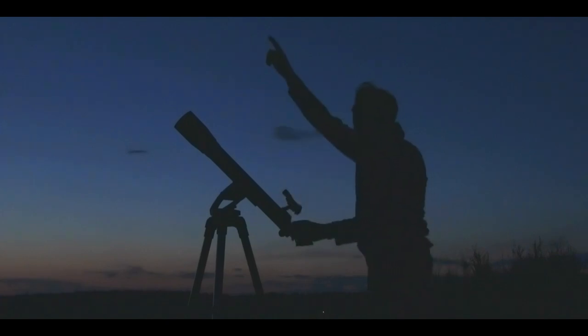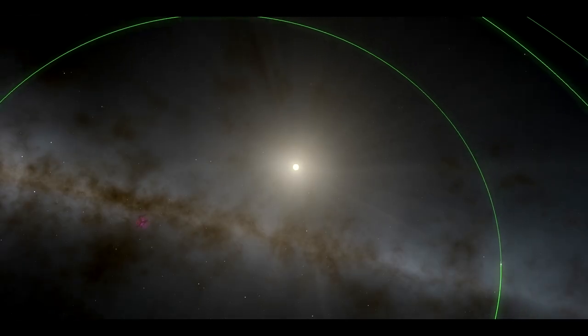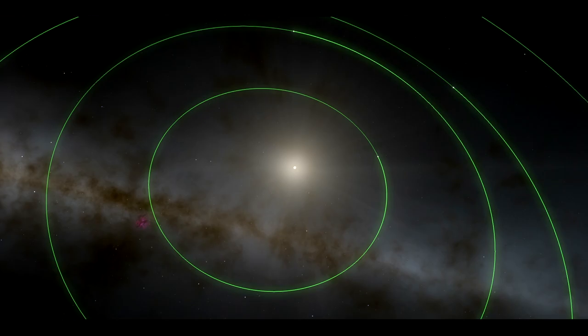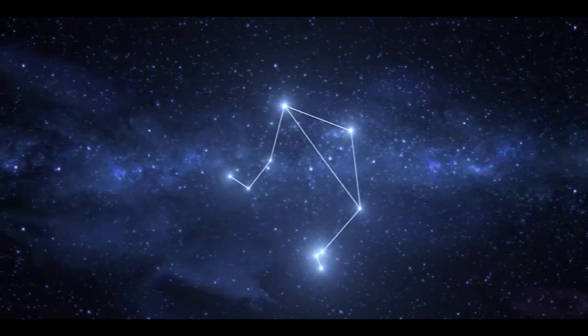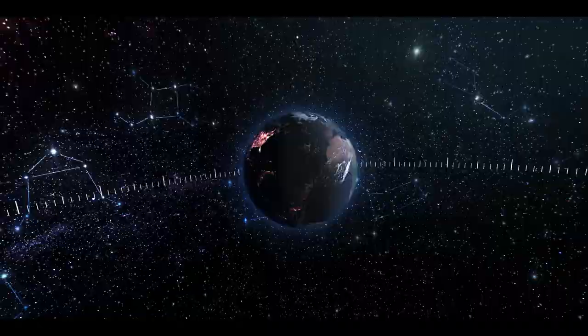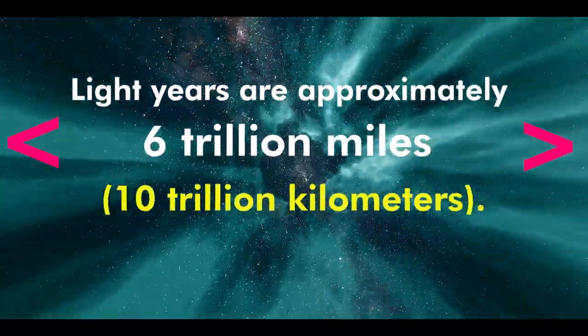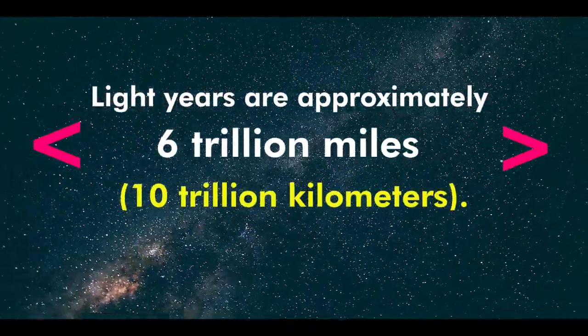The team discovered two newly discovered planets orbiting Gliese 581. It lies in the constellation Libra, 20 light-years away from Earth. Light-years are approximately 6 trillion miles, 10 trillion kilometers.